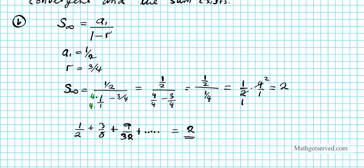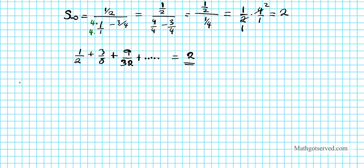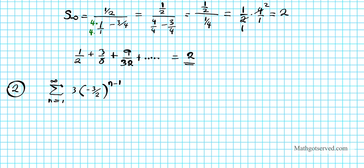Now let's take a look at number 2, executing the same steps. For number 2 we have the series expressed in sigma notation: the sum from n equals 1 to infinity of 3 times negative 3/2 raised to the n minus 1. We know it's an infinite geometric series because we're summing from n equals 1 to infinity.